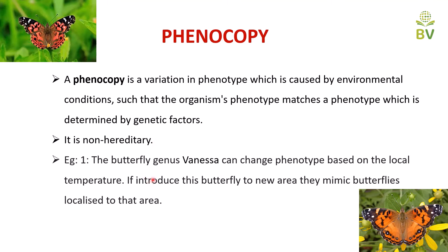For example, the butterfly genus Vanessa can change phenotype based on local temperature. If introduced to a new area, they mimic the butterflies localized to that area. Because of the temperature of that particular area, this Vanessa butterfly's normal phenotype changes to resemble the local butterfly.